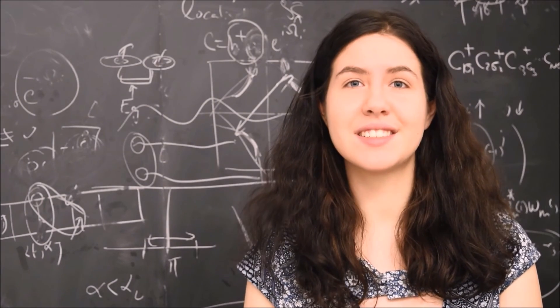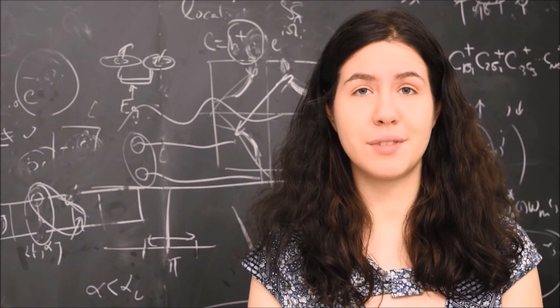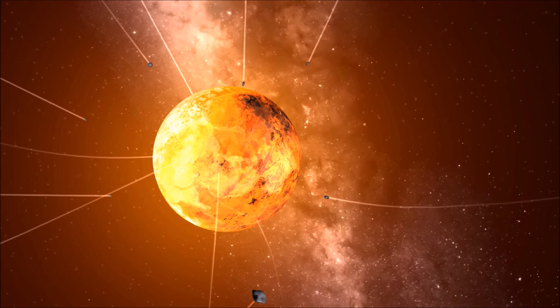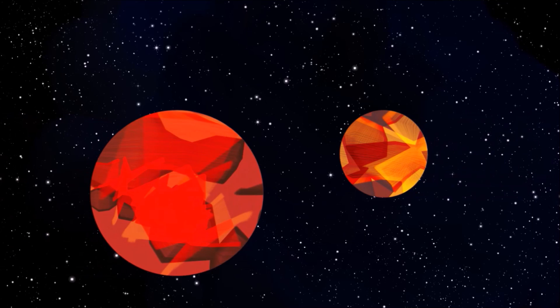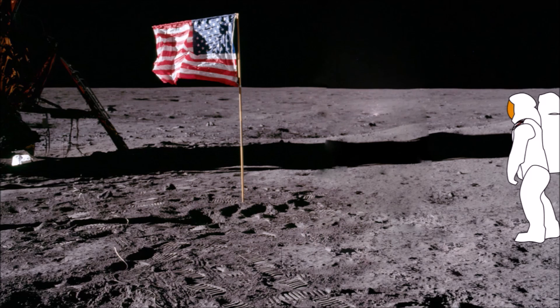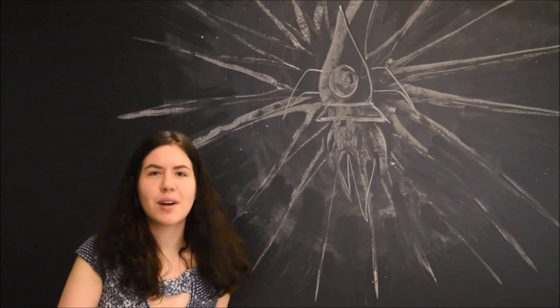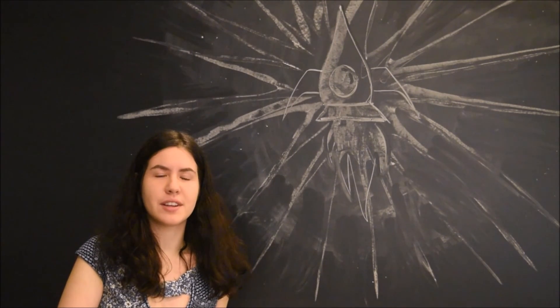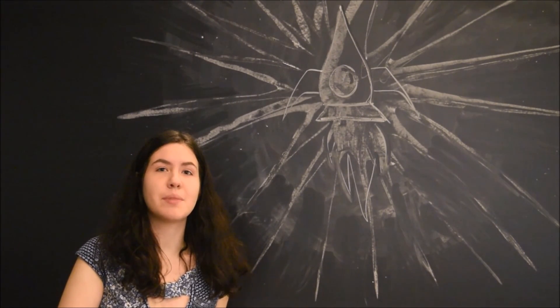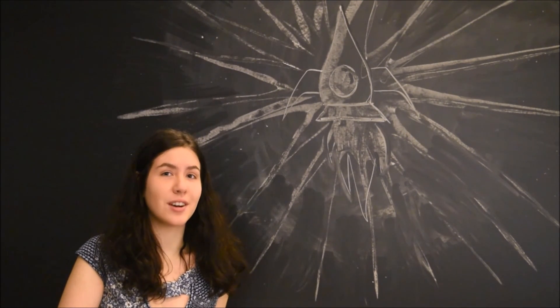The giant impact theory is still the most accepted explanation for the formation of the Moon. Although other proposed theories can account for most physical and chemical observations of the Earth-Moon system, they all struggle to show how the Earth and Moon came to have such similar compositions or their current angular momentum. The multiple collisions theory comes closest, however it is much less likely to have occurred than the giant impact theory. The Apollo missions have been critical in shaping the currently most accepted theory, both with rock samples and with seismic data. Perhaps future missions will gather further evidence that will allow for further refinement of the giant impact theory, or the dawn of a new hypothesis altogether.